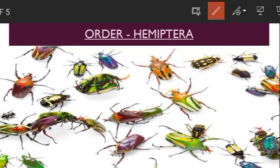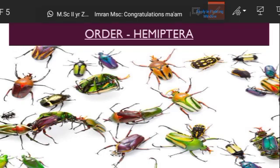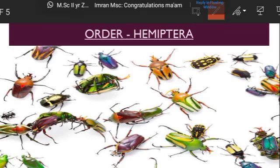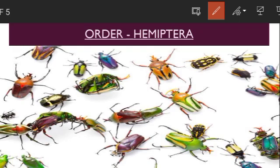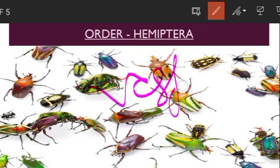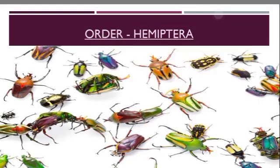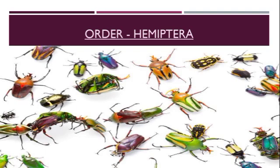When talking about the appendages of the head region, antennae will be mostly 4–5 segmented, filiform type. But in certain cases they could be 10 segmented, 25 segmented, or even vestigial and of no use. Regarding eyes, they are well developed in most cases, but in ectoparasites the eyes will be absent. Ocelli are 2 in Heteroptera, and absent in Homoptera or the family Cimicidae.